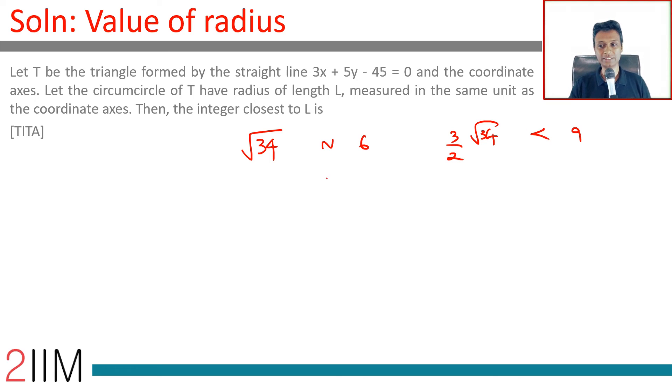It is close to 6 but less than 6. So 3 by 2 of a number, if it has to be equal to 8.5, then this number would be 8.5 times 2 by 3, which is 17 by 3. So square root of 34 is more than 17 by 3, we are good. It will round off to 9. If it is less than 17 by 3, it could round off to 8 also, maybe 7. I don't think it will go as low as 7.